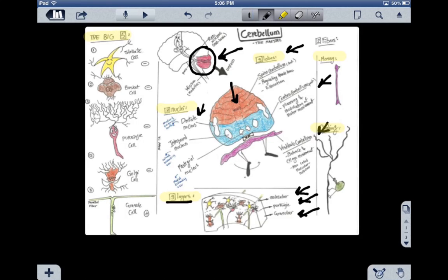One is the stellate cell. Stellate means star, that's why we have it in this shape. We have the basket cell, Purkinje cell, it's my favorite, Golgi cell, and granule cell.